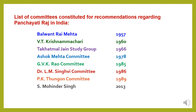Various committees were constituted for recommendations regarding Panchayati Raj in India. The list includes: Balwant Rai Mehta Committee in 1957, V.T. Krishnamachari Committee in 1960, Taktamal Jain Study Group in 1966, Ashok Mehta Committee in 1978, J.V.K. Rao Committee constituted in 1985, Dr. L.M. Singhvi Committee in 1986, P.K. Thanggan Committee in 1989, and S. Mohinder Singh Committee in 2013.